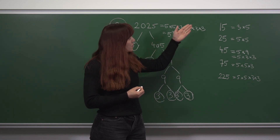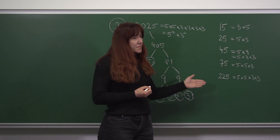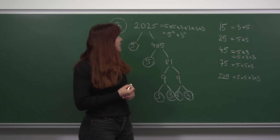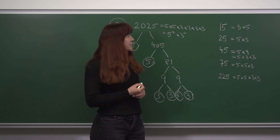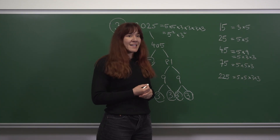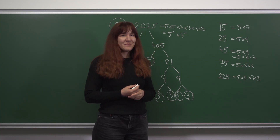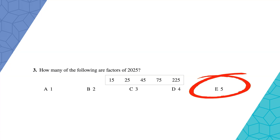This means that all 5 of these numbers are factors of 2025, which gives us option E as the answer. Thank you.